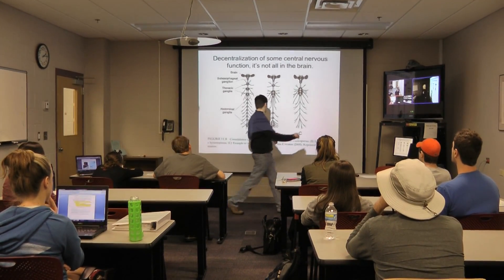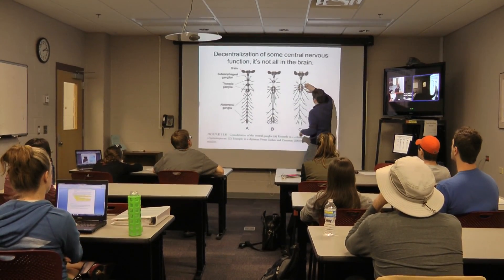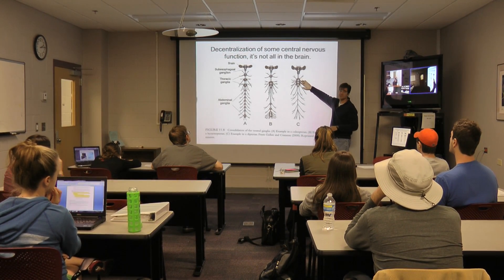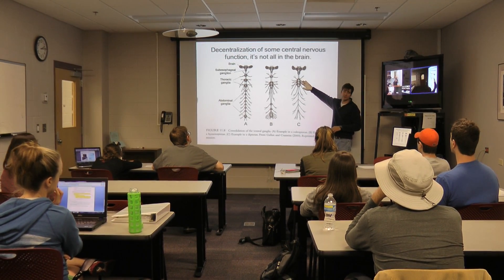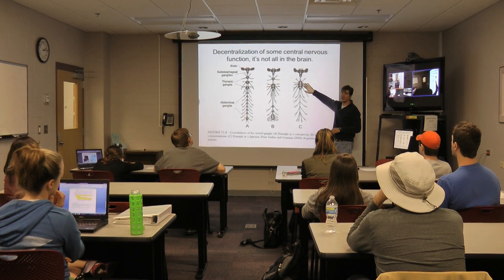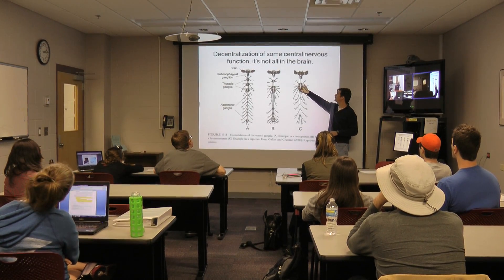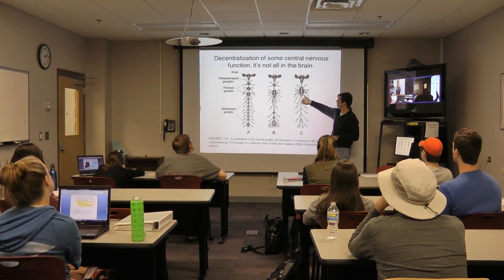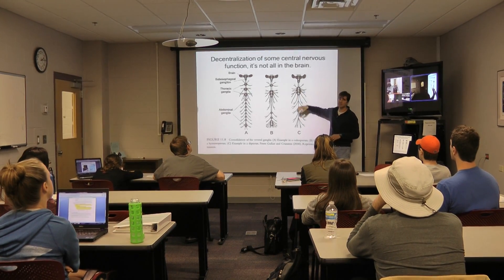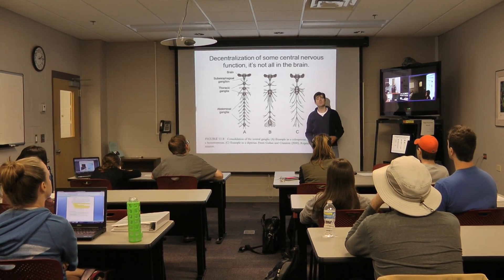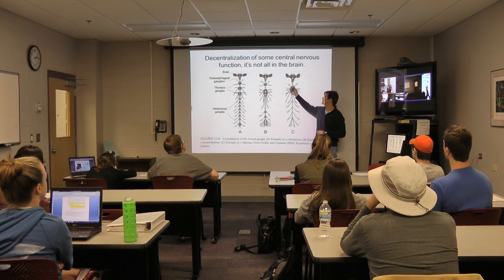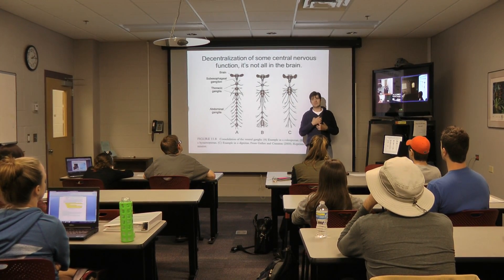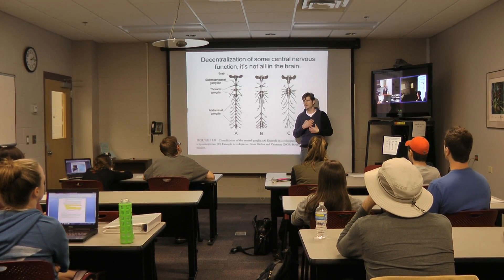And if we look at one of the most extreme cases of ganglionic fusion, here this is in a higher diptera — this is in the blowfly. We can see here that in these animals, almost all of the distributed ganglia from the abdomen and thorax are pushed up into one large ganglionic unit that sits only in the thorax.